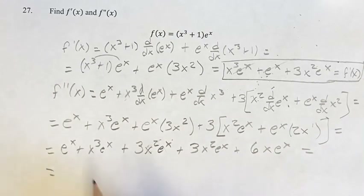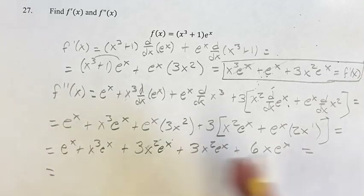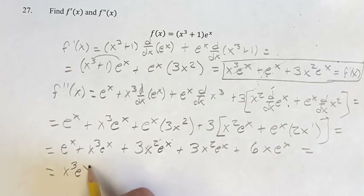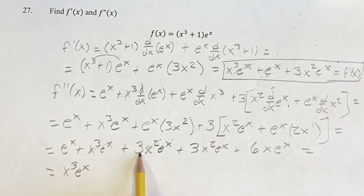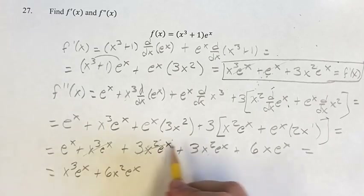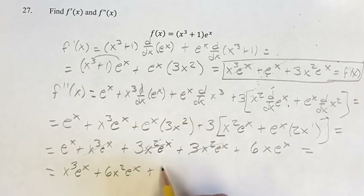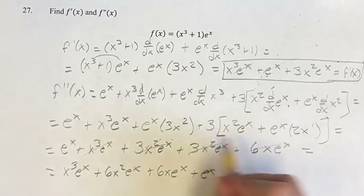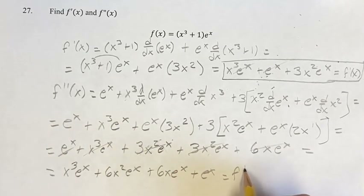We actually do have to do one more simplification. I'm going to write it in terms of the highest x term all the way down to the lowest. So we have x cubed e to the x. Plus 3 x squared e to the x plus another 3 x squared e to the x is plus 6 x squared e to the x. We've used both of these terms now. Plus 6 x e to the x plus e to the x. And this is your second derivative.